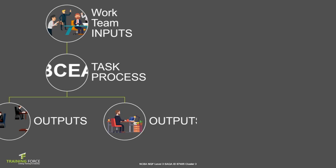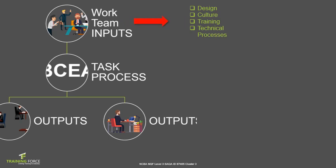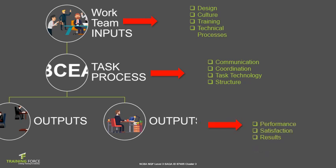To explain inputs, task processes, and outputs, we'll use the HR department as an example. The human resources department is the work team and provides the inputs for the function. Inputs provide the design, culture, training, and technical processes to run the department. The task processes are how communication, coordination, task technologies, and structures are put together — how each team member is placed in a specific position, how they communicate, coordinate, and perform tasks. The output is performance: the satisfaction of achieving the goal and the results achieved.